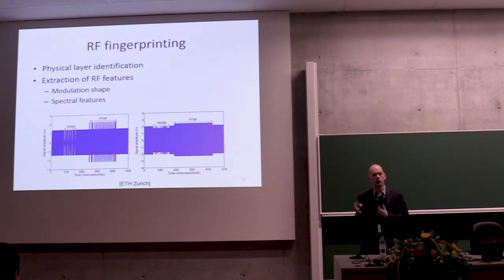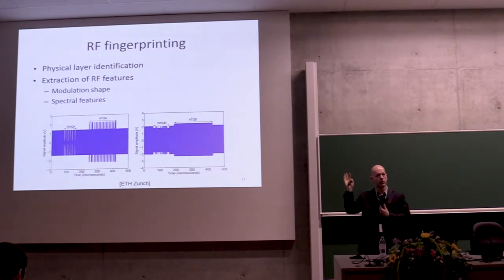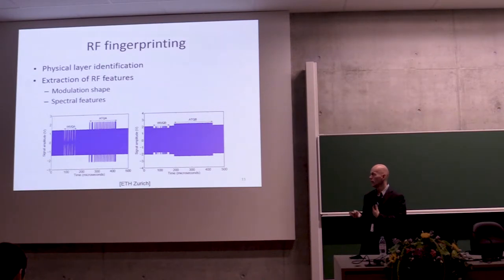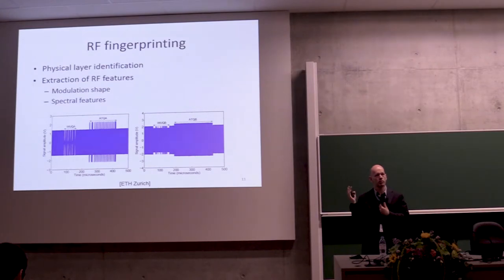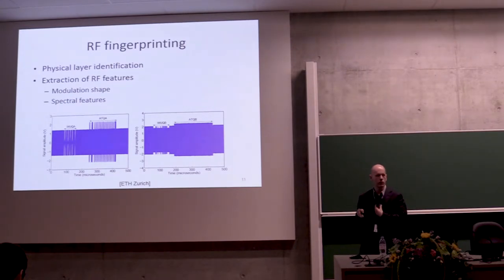If you only want to identify whether it's a device of a particular brand or model, you can achieve accuracies of 99-point-something percent. This was first discovered for RFID cards more than 10 years ago, but people have since looked at LoRa and all other types of wireless communication, showing that fingerprinting is possible for these technologies too.